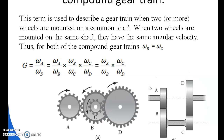The next gear train is the compound gear train. In a compound gear train, one shaft can contain more than one gear — two or more. In this gear train we have four gears: A, B, C, and D, but only three shafts. Shafts 1 and 3 contain only one gear each (A and D), while shaft 2 contains two gears, B and C. Now we will discuss the velocity ratio of this train.